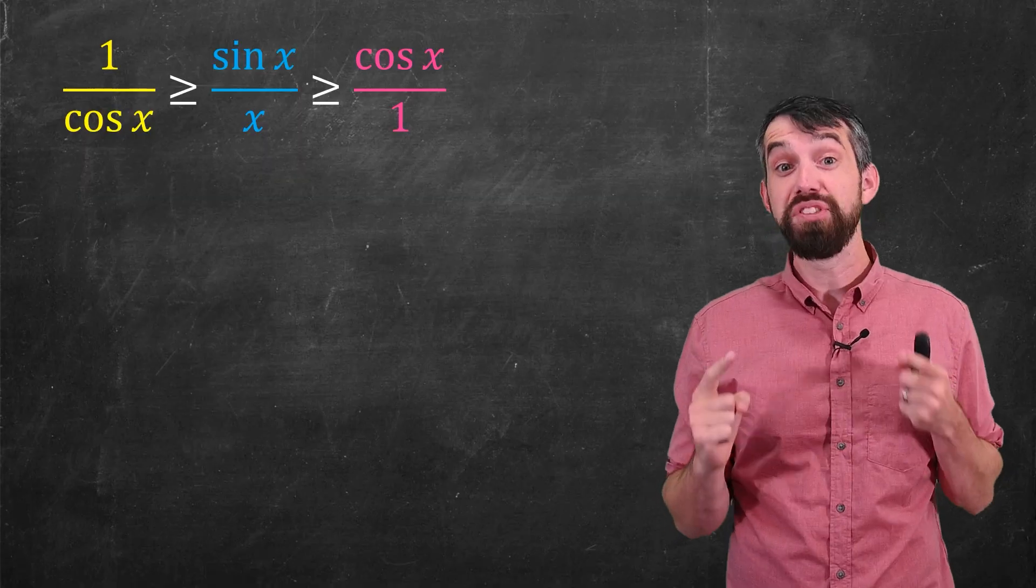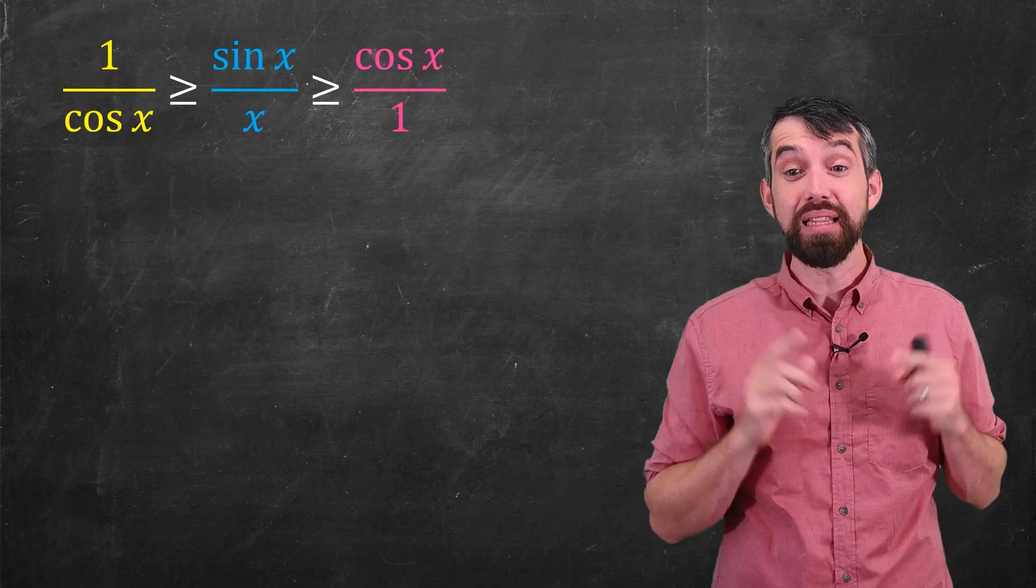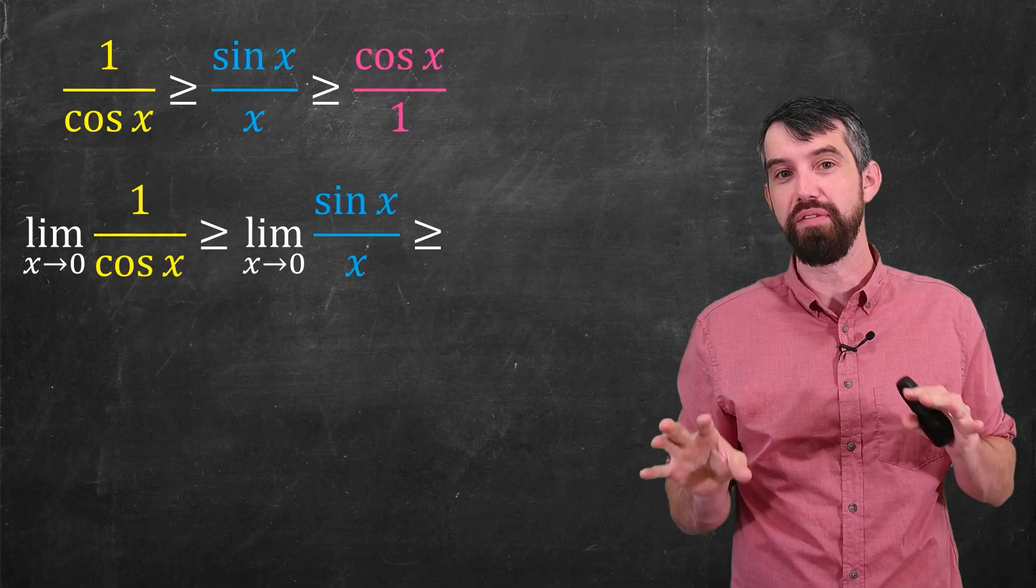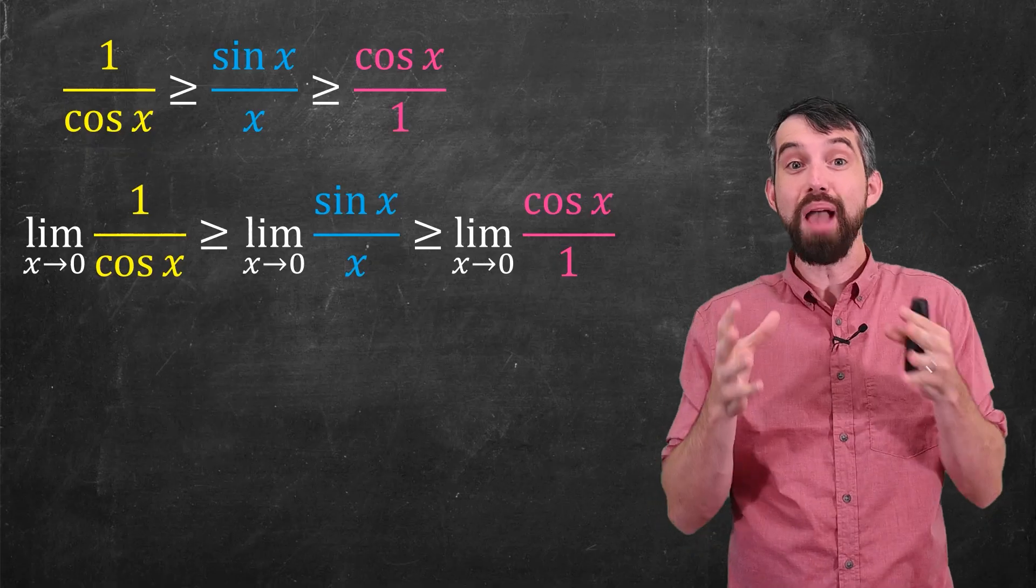Now, the reason I've done all this, the reason I've set this whole argument up, is that I want to take the limit as x goes to 0 for every one of these terms in the inequality.